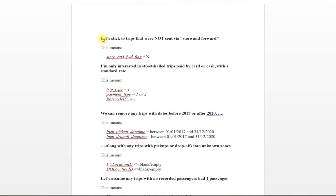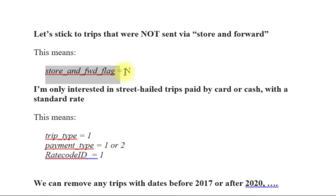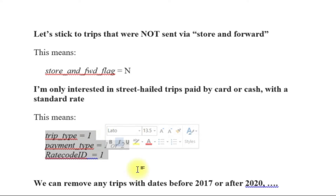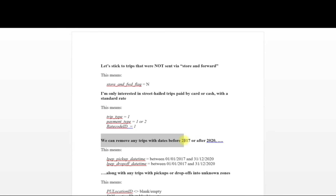So first of all, we're going to look at the data cleaning steps. First, we're going to look at trips that were not sent by store and forward — so we want the store and forward flag equal to N. Next, we're only interested in street hail trips paid by card or cash, so that means we want trip type equal to 1, payment type equal to 1 or 2, and rate code ID equal to 1. So we're going to have to do a couple of filters on that. Next, we're looking to remove any trips before 2017 or after 2020, so the pickup date time is between the 1st of January 2017 and the 31st of December 2020.